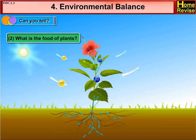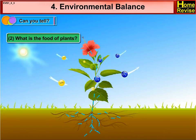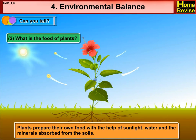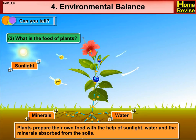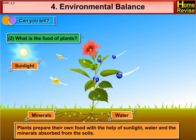What is the food of plants? Plants prepare their own food with the help of sunlight, water and the minerals absorbed from the soil.